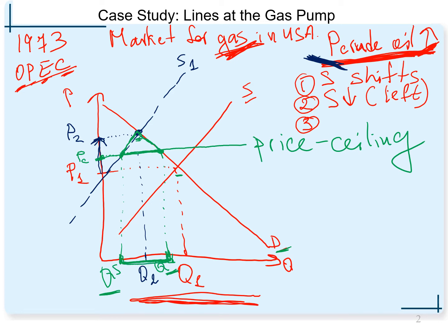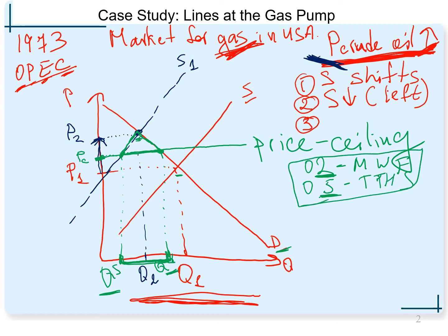When the government imposed this price ceiling and created a shortage for gas, long lines appeared at gas stations. The government dictated when you could get gas based on your license plate: if your plate ended in an even number, you could get gas Monday, Wednesday, Friday; if it ended in an odd number, then Tuesday, Thursday, Saturday. There was a pretty big mess on the market for gasoline with the long lines.